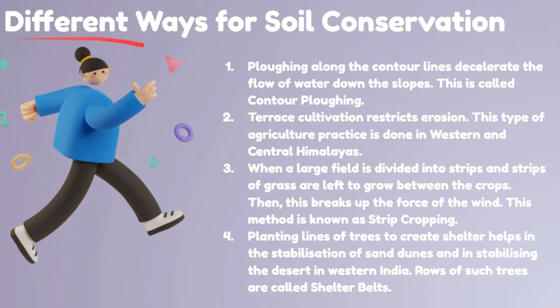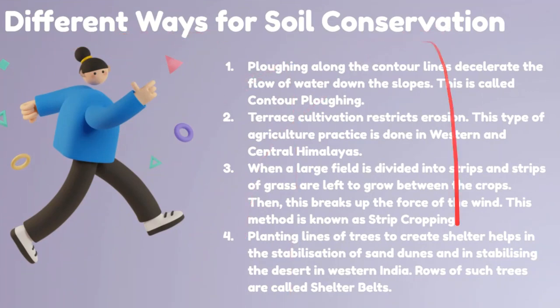There are different ways for soil conservation. Flowing along the contour lines decelerates the flow of water down the slopes — this is known as contour plowing. By planting along the contour, the flow of water is reduced and the rate of soil erosion is reduced.